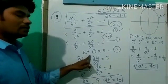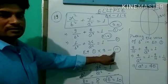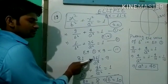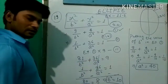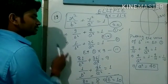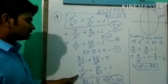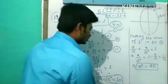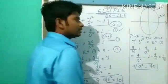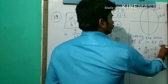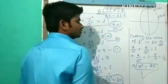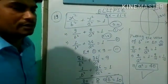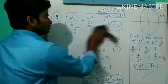By solving these two equations, we find that b² equals 10. Now we have the b² value.